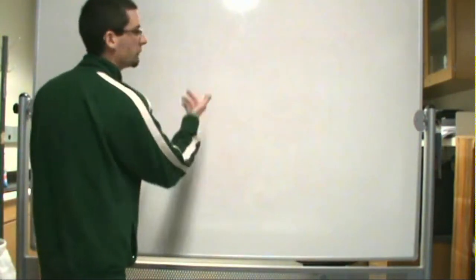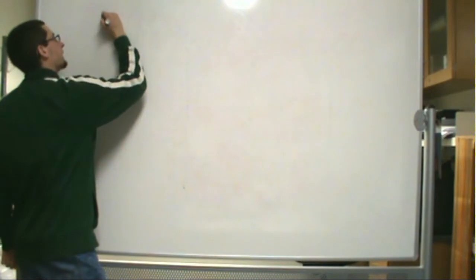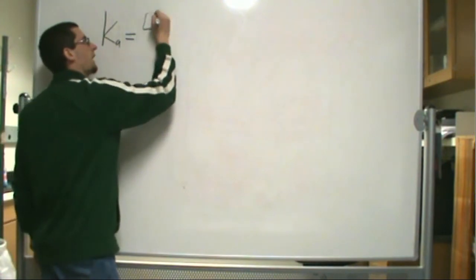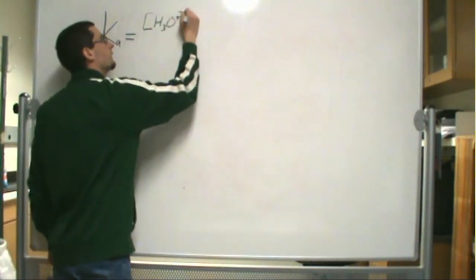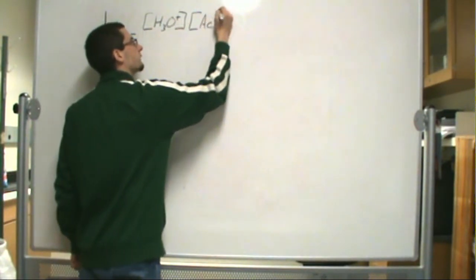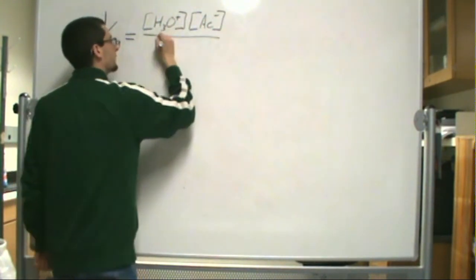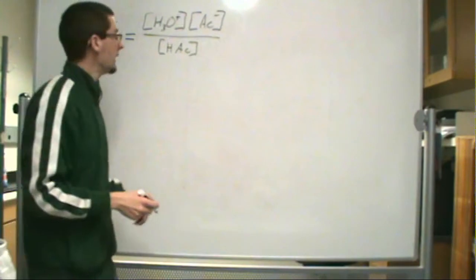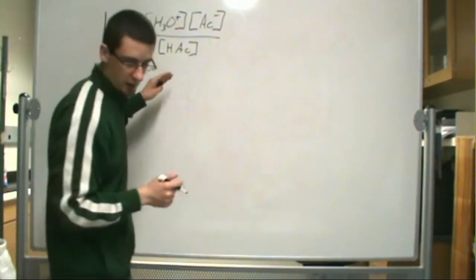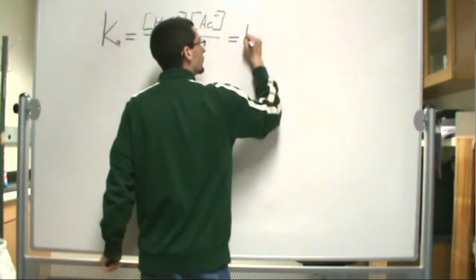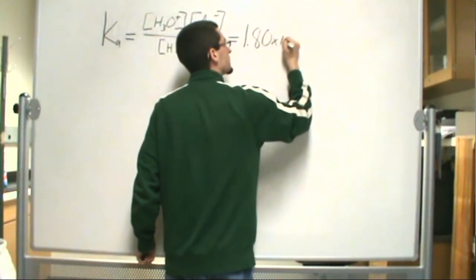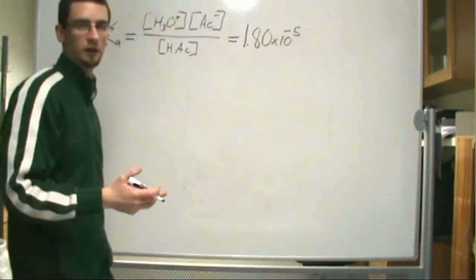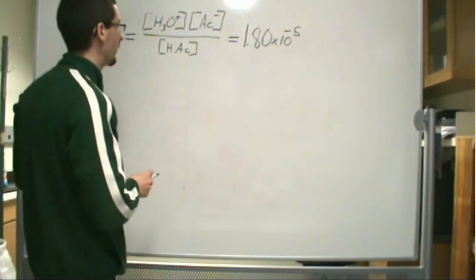Alright, so if you remember the equation I just wrote down, so we have Ka, it's products over reactants. So in this case, it's our hydronium ion concentration times our acetate ion concentration all divided by our acetic acid concentration. Now remember, this is for a weak acid. And you can look up these Ka values, which I've already done. In this case, our Ka is equal to 1.80 times 10 to the minus 5. Now you can find these values usually in the appendix of your chemistry textbook or you can find them online. Wikipedia usually has them also.